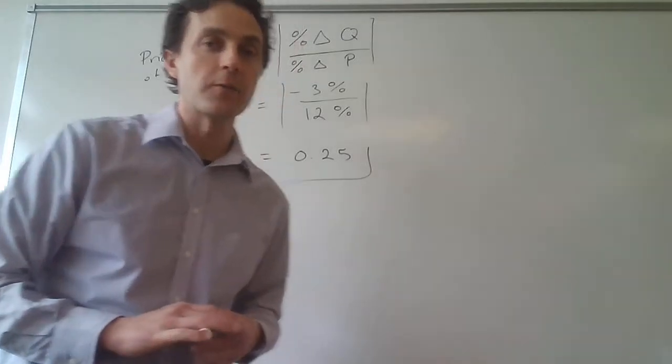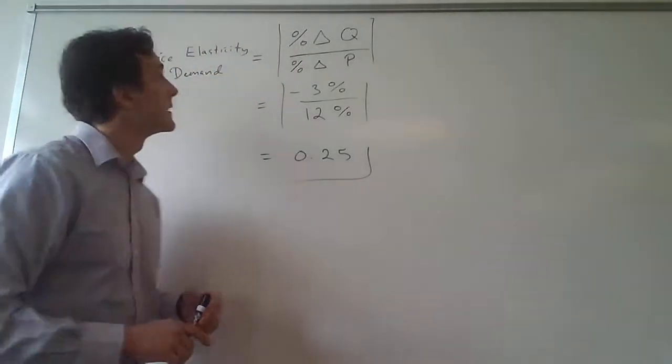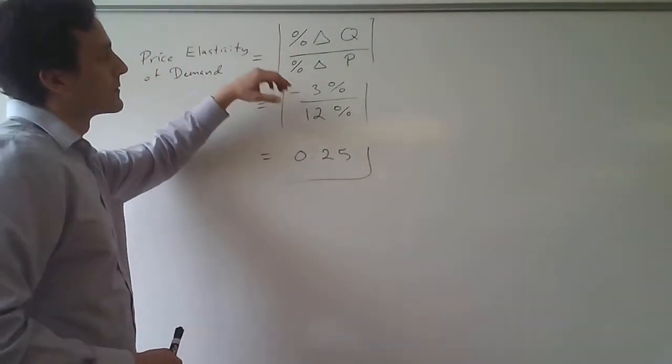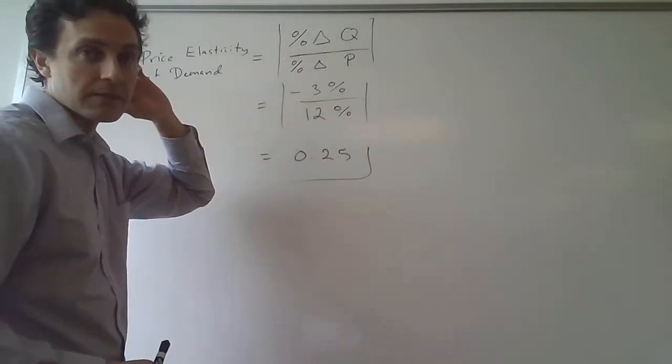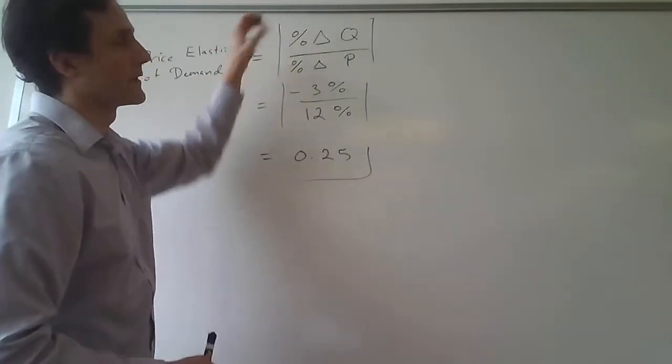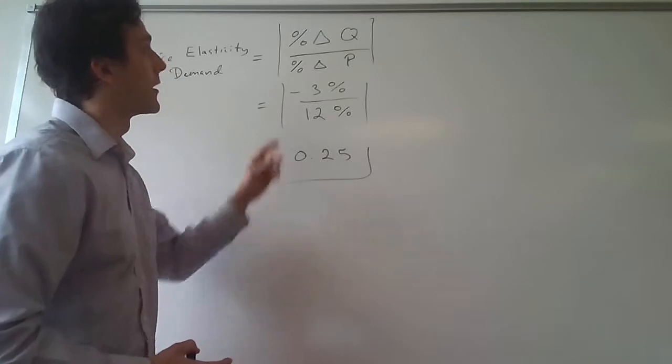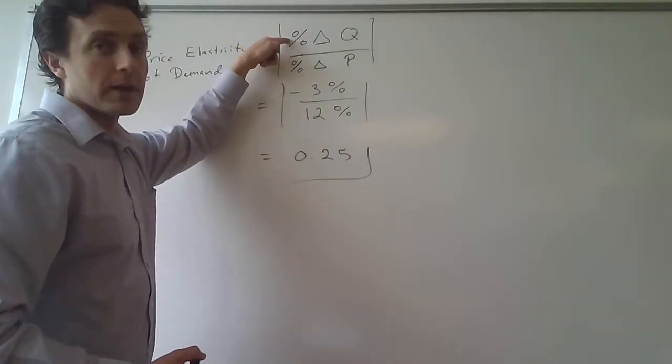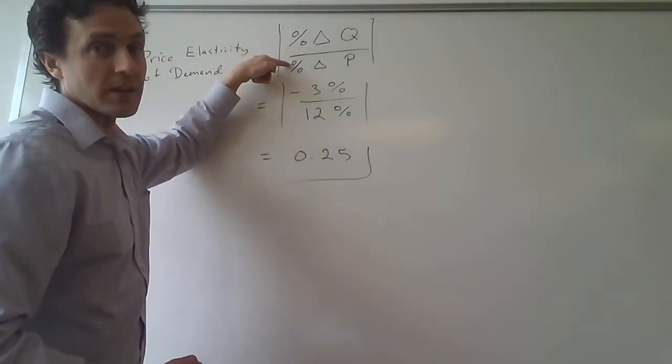All right, so remember, the formula for the elasticity of demand is that it's equal to—we usually take out the negative—so we just essentially take the absolute value of the percentage change in the quantity divided by the percentage change in the price.